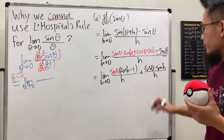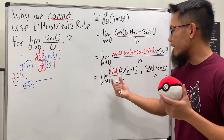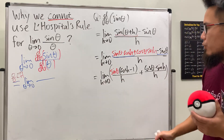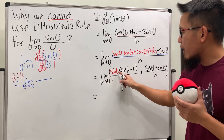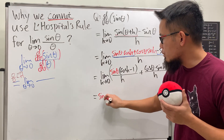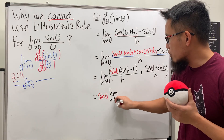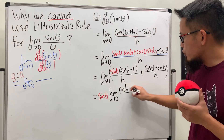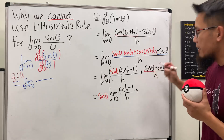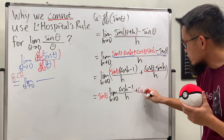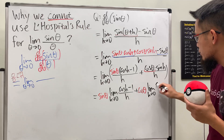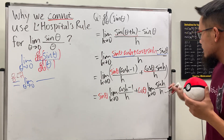We have two things inside the limit. The limit of a sum is the sum of limits, provided both limits exist — and they do. Since we're in the h world, theta is just a constant. So sine(θ) comes out front: sine(θ) times the limit as h→0 of (cos(h) − 1)/h, plus cos(θ) times the limit as h→0 of sin(h)/h.